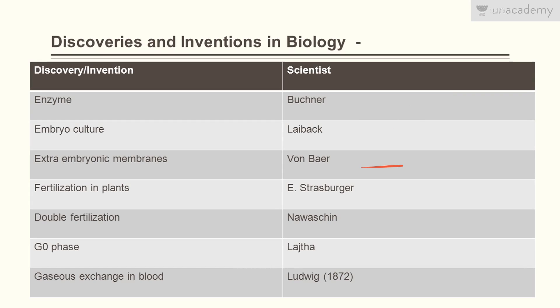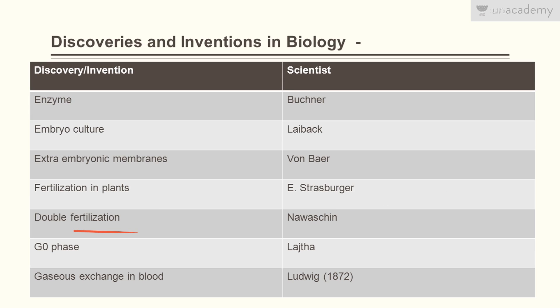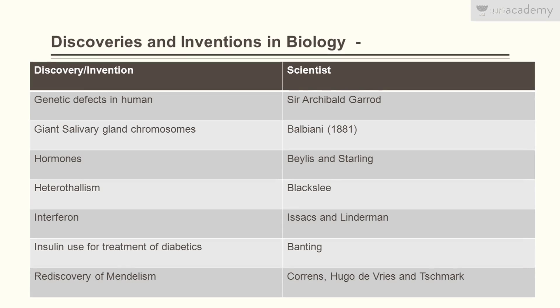Extra-embryonic membranes were discovered by Von Baer. Fertilization in plants was discovered by Strasburger. Double fertilization was discovered by Nawaschin. G-phase was discovered by Lajtha. Gaseous exchange in blood was discovered by Ludwig in 1872.